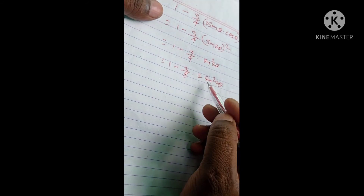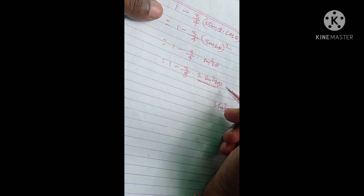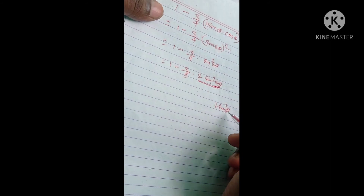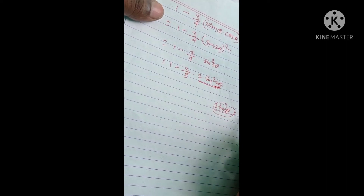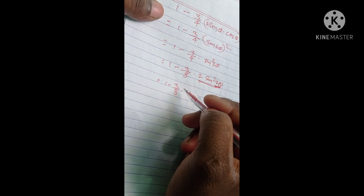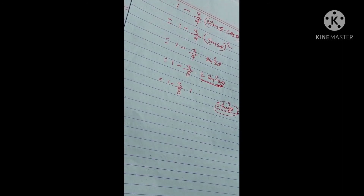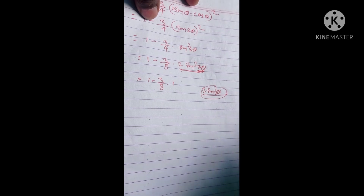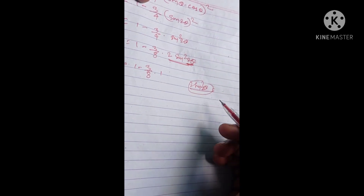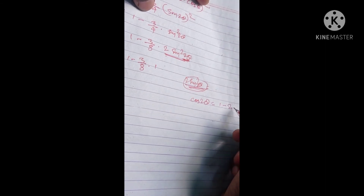Using the two sine square theta formula: 2sin²2θ = 1 minus cos4θ. So sin²2θ = (1 minus cos4θ)/2. Substituting: 1 minus 3/4 times (1 minus cos4θ)/2, which gives 1 minus 3/8(1 minus cos4θ).